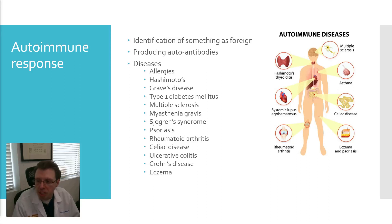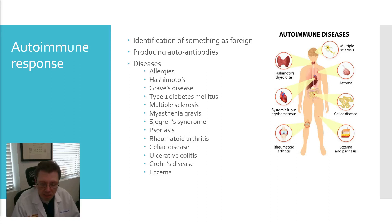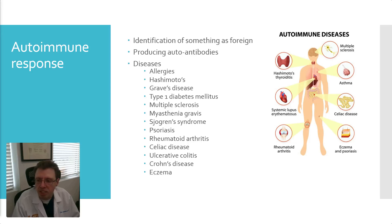Psoriasis affects both skin plaques and joints. Rheumatoid arthritis is a big one — it causes the synovium, or the surrounding part of the joint, to overgrow because of the irritation from the antibodies. Celiac disease, as people know, is a reaction to gluten. Ulcerative colitis and Crohn's disease are inflammatory diseases of the bowel. And of course, eczema is allergy-related.